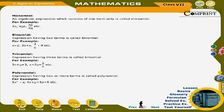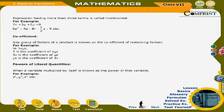Polynomial: An expression having two or more terms is called a polynomial. For example: 3x² + z, 4x + y + 3p + 8, etc. An expression having more than three terms is called a multinomial. For example: 7x + 3y + 2y + 8, 9p² + 4q + 8r − (1/3)s + 9, etc.